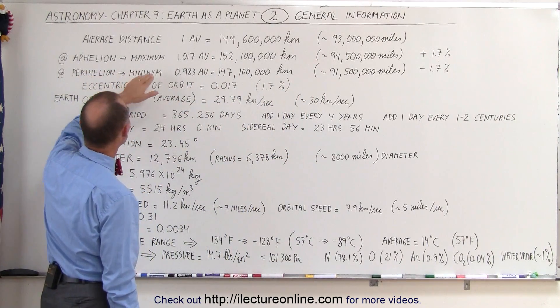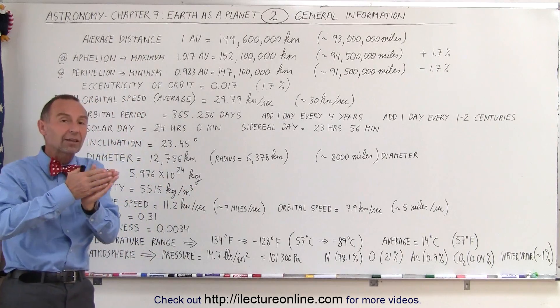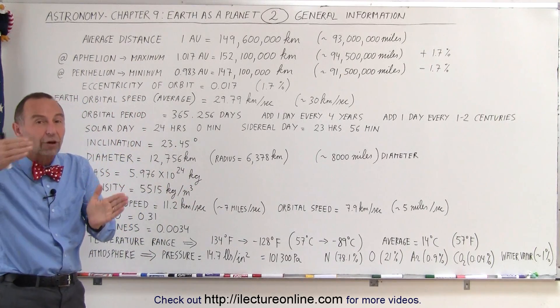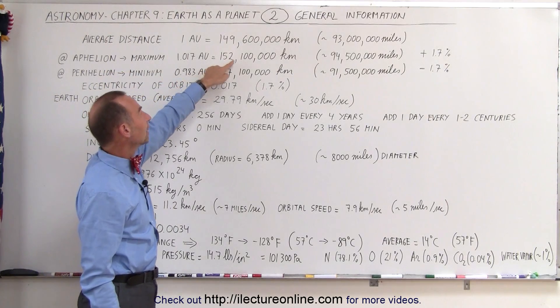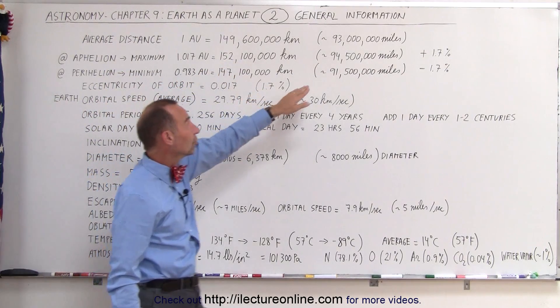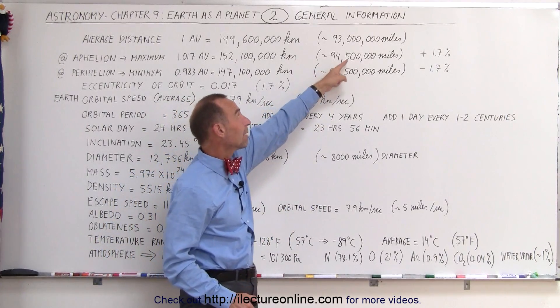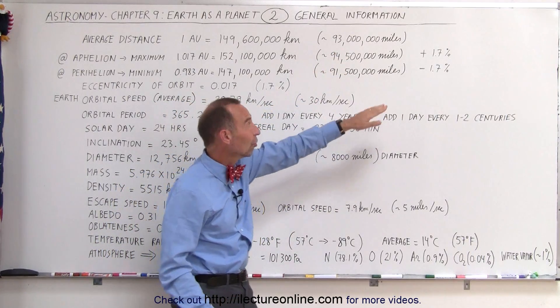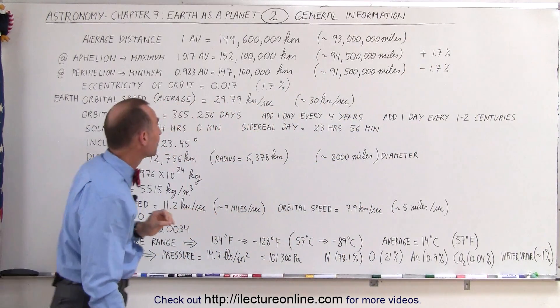The average distance in kilometers is 149,600,000, about 93 million miles, but sometimes it is farther away at aphelion. Aphelion is the indication that the planet, in this case the Earth, is farther from the Sun in its orbit. It can be as far as 152,100,000 kilometers away, which is about 94.5 million miles.